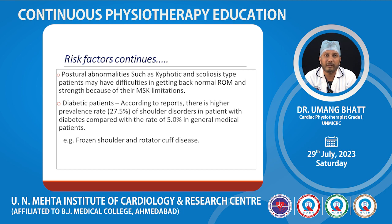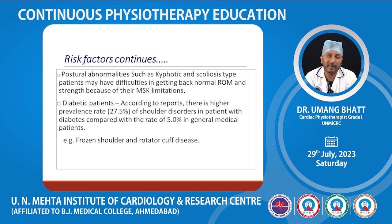Postural abnormalities such as kyphosis and scoliosis may make it harder for patients to regain normal range of motion and strength due to their musculoskeletal limitations. Additionally, diabetic patients have slower improvement; one study reports a higher prevalence of shoulder disorder at around 27.5% compared to 5% in the general population. Diabetic patients are also more prone to frozen shoulder and rotator cuff disease.